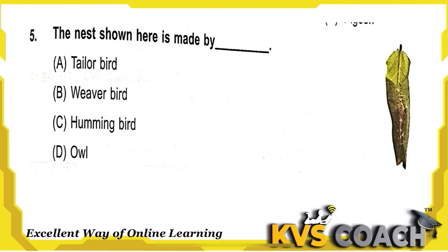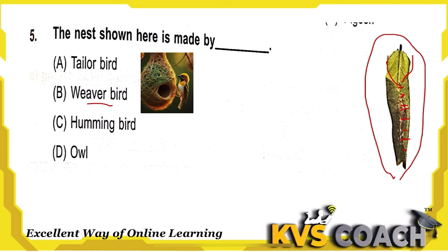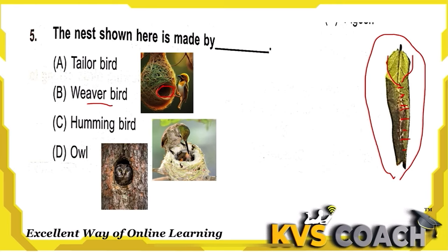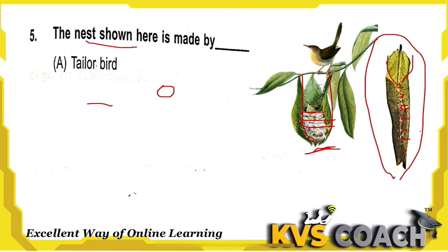Next question: the nest shown here is made by which bird? This is the tailor bird's nest — you can see they are sewing leaves, just like a tailor sews. I'll also show you the weaver bird's nest, which has a small hollow entrance. The hummingbird nest and owl nest — owl nests are in the trunk of trees. The correct answer is Option A, the tailor bird.